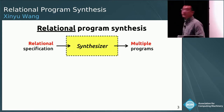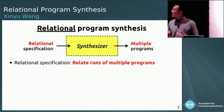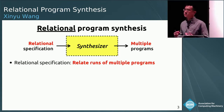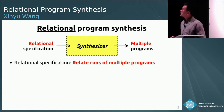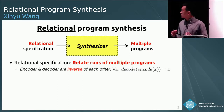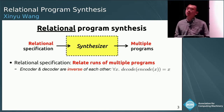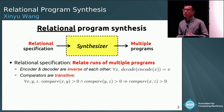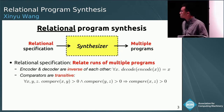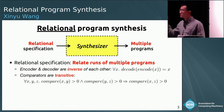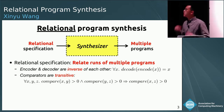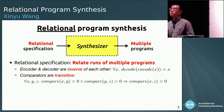So what do I mean by relational specification? A relational specification is a specification that relates multiple programs, or different executions of the same program. For instance, a relational specification can specify the property that any value pair of encoder and decoder implementations should always be inverse of each other. It could also express the transitivity property of any correct implementation of a comparator. Note that this is still a relational specification, because it talks about multiple different executions of the same program with different inputs.